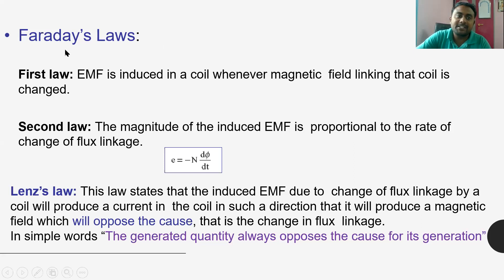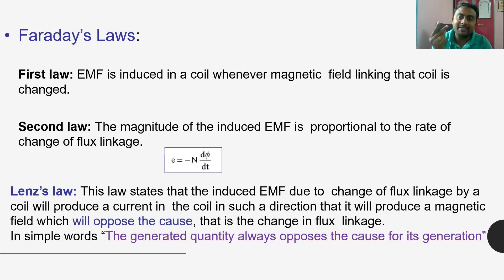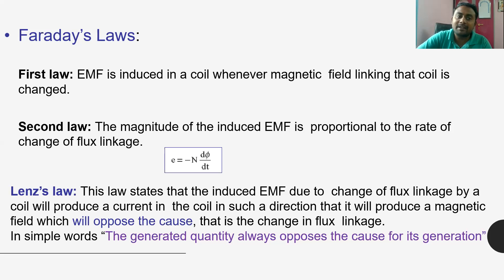I am going to explain the properties with respect to Faraday's laws. Faraday's first law is the generating principle — alternating motion between the flux and conductor will induce an emf in the conductor. We have two quantities: flux and conductor. If flux is rotating, the conductor has to be standstill; if the conductor is moving, the flux has to be standstill. That alternating motion will induce an emf in the conductor.